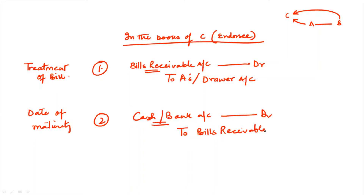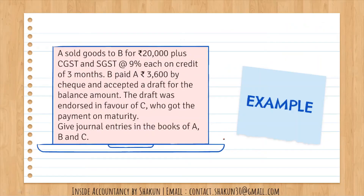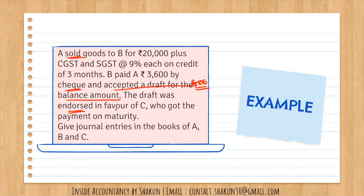Example: A sold goods to B for 20,000 plus CGST and SGST at 9% each. B paid 3,600 by cheque and accepted a draft for the balance amount. The draft was endorsed in favour of C, who received the payment on maturity. Pass journal entries in the books of A, B, and C.